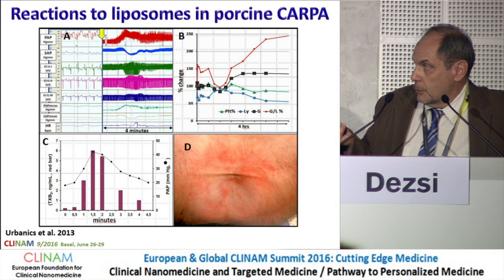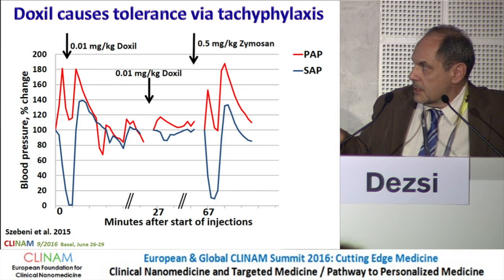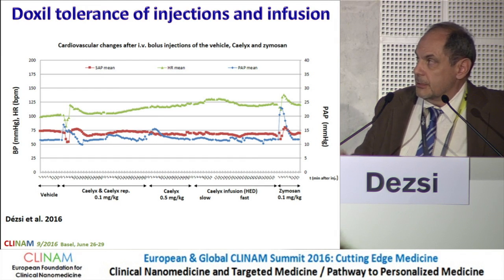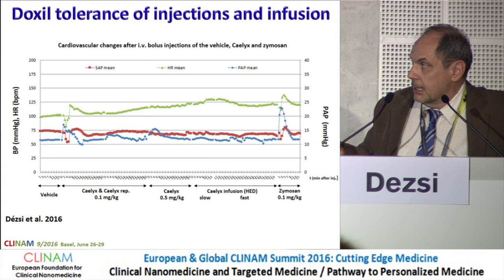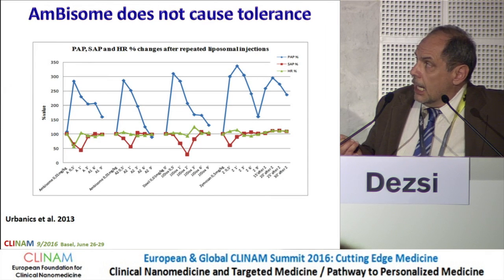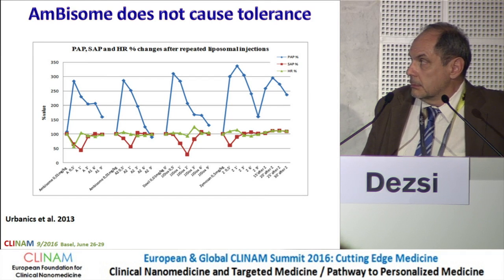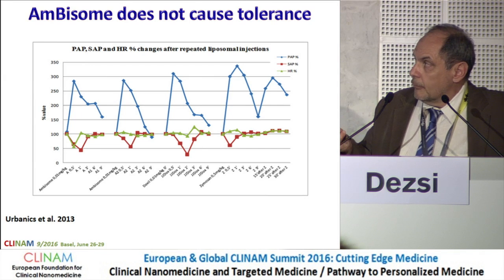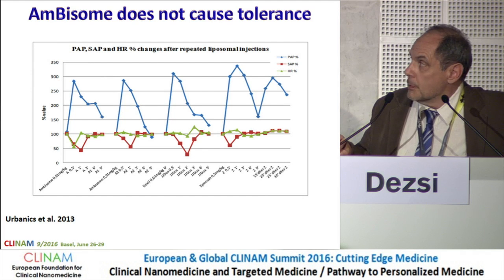We measure thromboxane levels, and thromboxane release follows the changes in pulmonary arterial pressure very well. You can also see the skin reaction in the pig. Regarding the tolerance phenomenon, in one study we injected Doxil with repeated and increased doses, including the human equivalent dose, and tachyphylaxis persists. However, AmBisome behaves differently — repeated injection of AmBisome does not cause tachyphylaxis. We don't really know the cause of this difference.